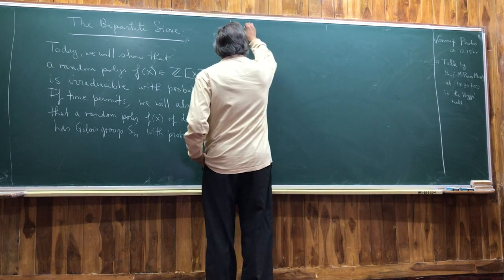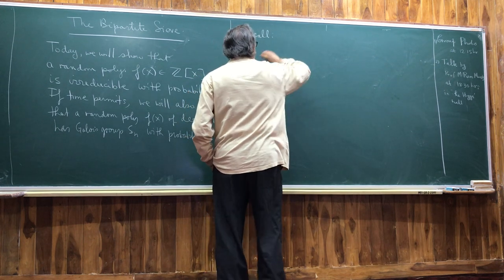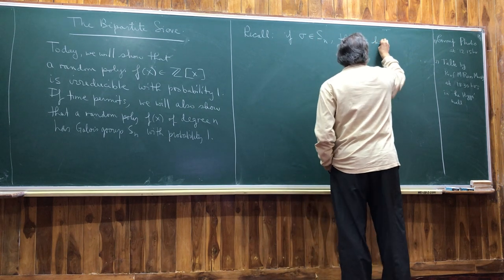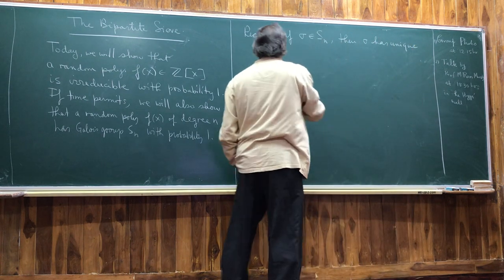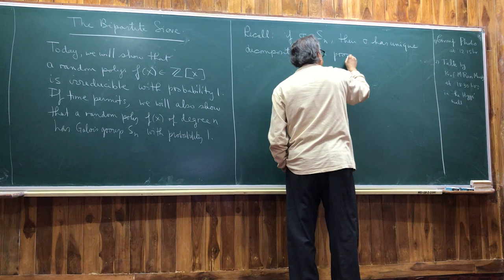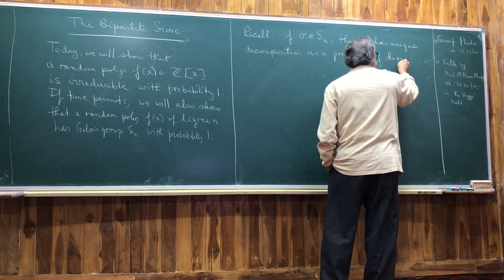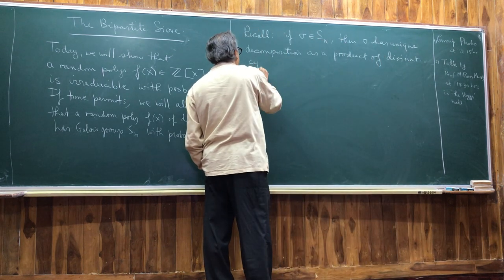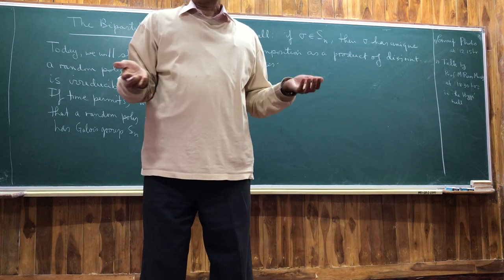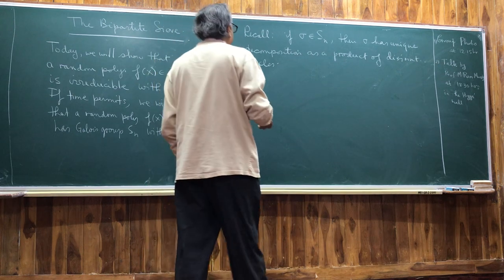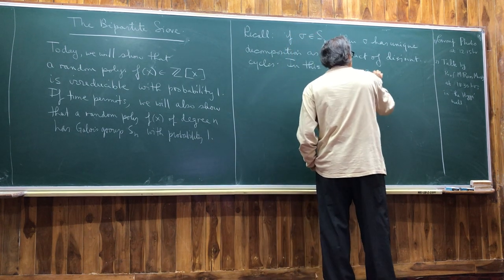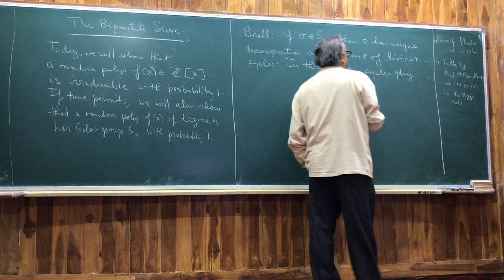You may recall that if sigma is a permutation of the symmetric group, then sigma has a unique decomposition as a product of disjoint cycles. In some sense, therefore, cycles play the role of primes in this setting.